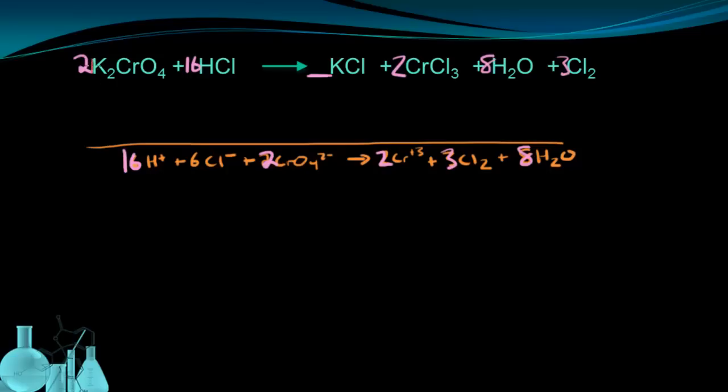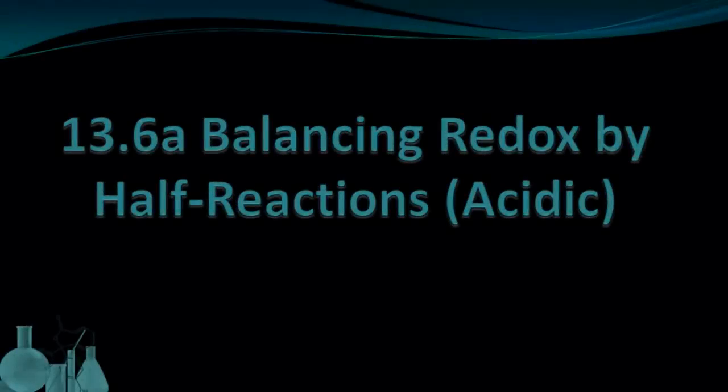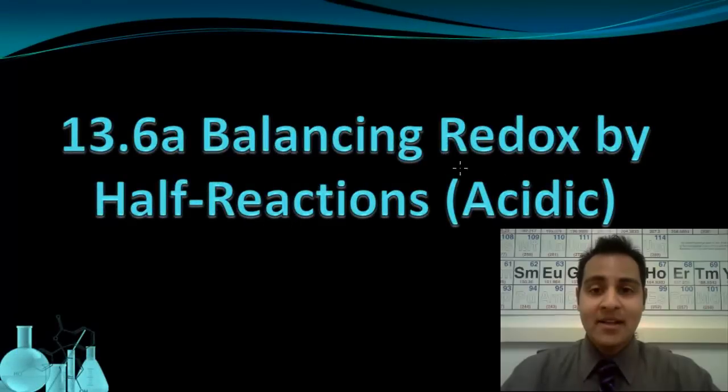That means I also need 4 potassiums here. We've now completely balanced this reaction in terms of charge and mass. And we did it by using half-reactions. This is a fairly long method. But if you keep track of the steps, it's pretty straightforward. In the next video, balance is a slightly more difficult reaction to show this same process. That wraps up our lesson on balancing redox by half-reactions given in acidic solution. Write down any questions you have in your notes and bring them with you to class.